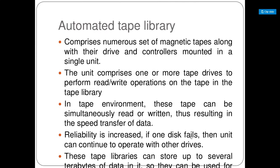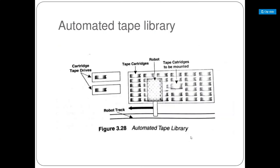The next is Automated Tape Library. Here, magnetic tapes and their controls are put in a single unit, connecting more than one tape drive to read and write information to the tape library. They can be simultaneously read and written, so the data transfer rate is higher. Reliability is increased — if one disk goes wrong, you can continue with the other disks. Tape libraries can store up to several terabytes and are used where very large amounts of data need to be stored.